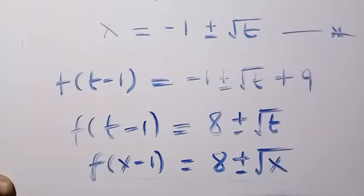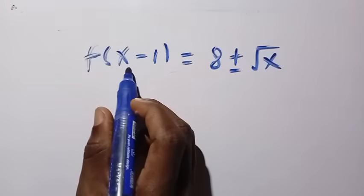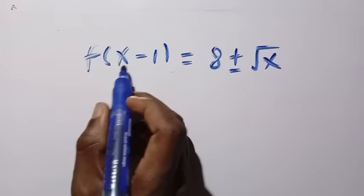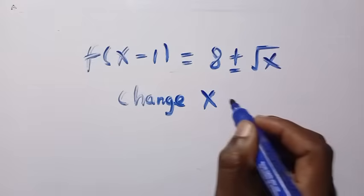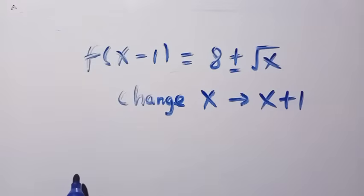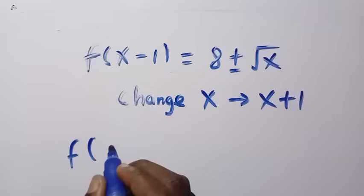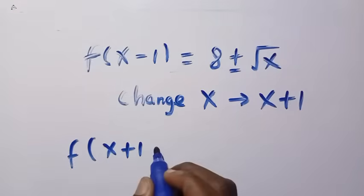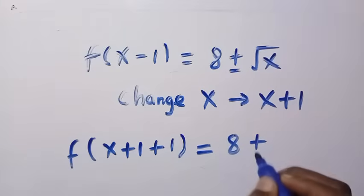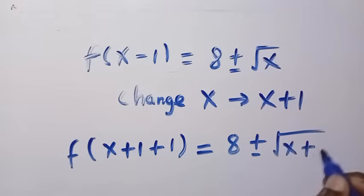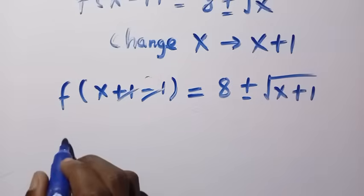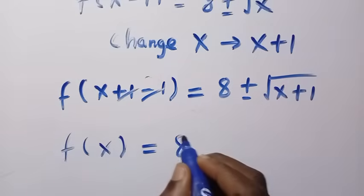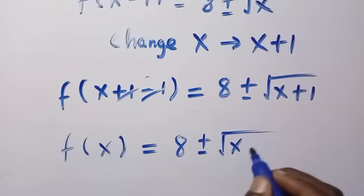We need f of x, not f of x minus 1. So we change x to x plus 1 throughout: f of x plus 1 minus 1 equals 8 plus or minus the square root of x plus 1. The x minus 1 and plus 1 cancel, giving us f of x equals 8 plus or minus the square root of x plus 1.